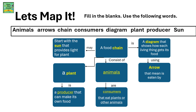Fill in the blanks using the following words: animals, arrows, chain, consumers, diagram, plant, producer, and sun. The appropriate words have been filled in the blanks, so you just need to read them and see why each is the appropriate one.